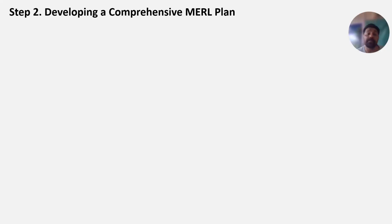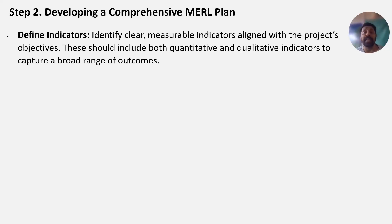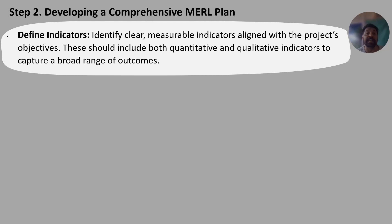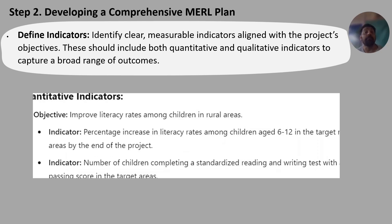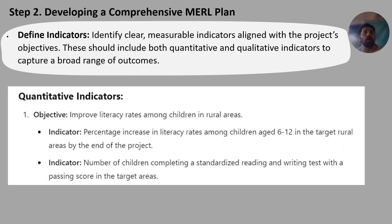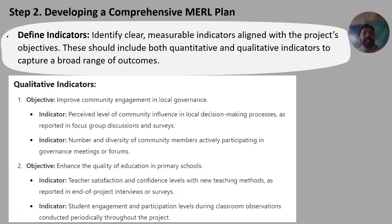Step two is to develop a comprehensive MERL or MNE plan. First, define clear measurable indicators aligned with project objectives. This should include both quantitative and qualitative measures.